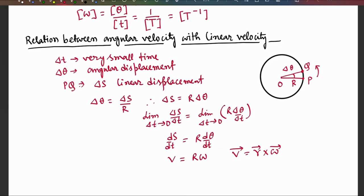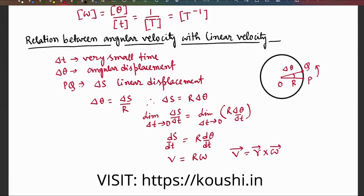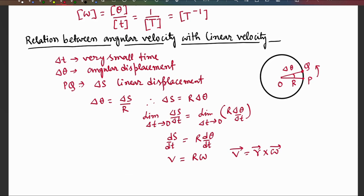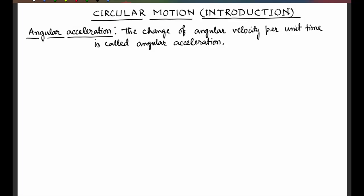Whenever a particle rotates in the XY plane in the anticlockwise direction, the direction of angular velocity is along the positive Z axis. Next, angular acceleration. The change of angular velocity per unit time is called angular acceleration.